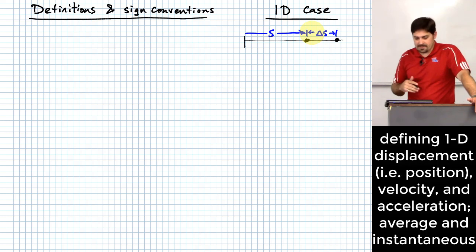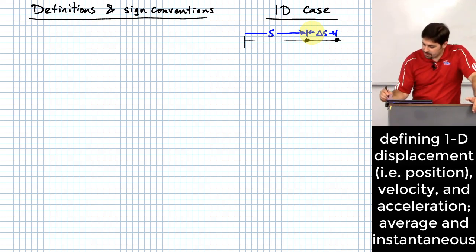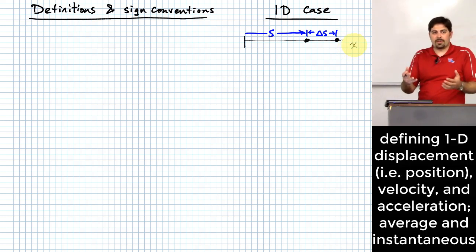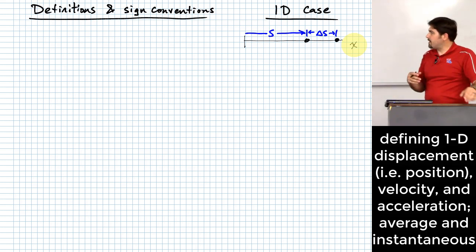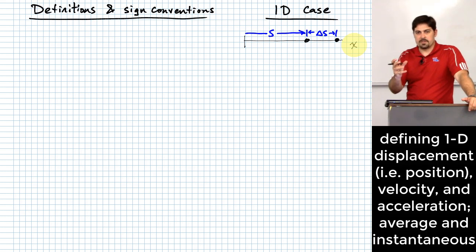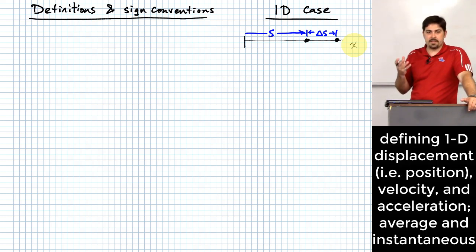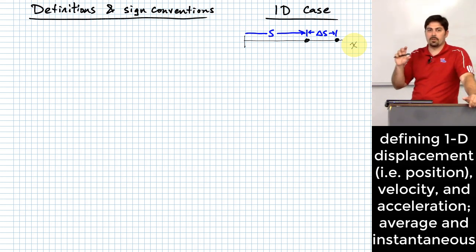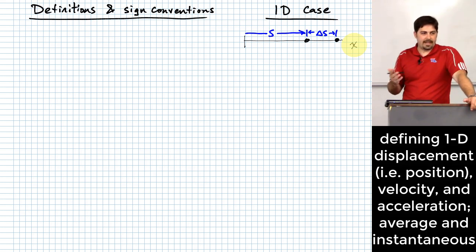I don't particularly like the variable s because we use it a lot as the unit of seconds, but I'll match what the book does. There's this idea of displacement and they use delta s — how did the position of that particle change along this linear line. What I actually prefer is to think of this as an x-axis and use a variable x instead. The big advantage of using s is that s implies motion along a path, and the path doesn't necessarily have to be a straight line.